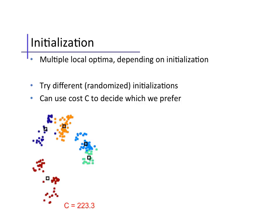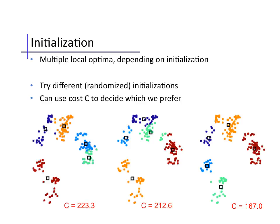For example, after one initialization and run, we might end up with this clustering with cost 223.3. If we initialize differently and run again, we might find a better clustering with slightly lower cost, 212.6. After we've run a few more with different random initializations, we might find a better clustering with cost 167.0. After several such executions, we keep the best according to this cost function C.